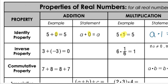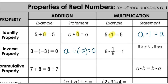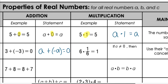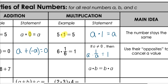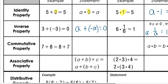The next property is the inverse property, where we're adding or multiplying the inverse of a number. For addition, we add a number with its opposite sign to cancel them out and get zero: a plus its opposite always gives zero. For multiplication, as long as a is not zero, any number times one over that number reduces to one. So we use opposites for addition and reciprocals for multiplication to cancel values out.